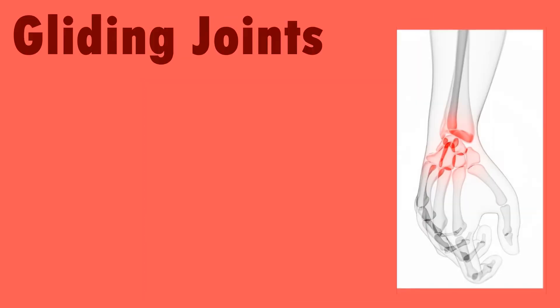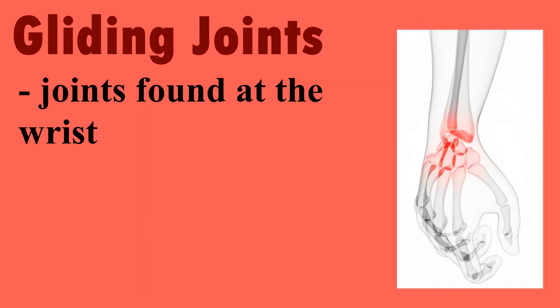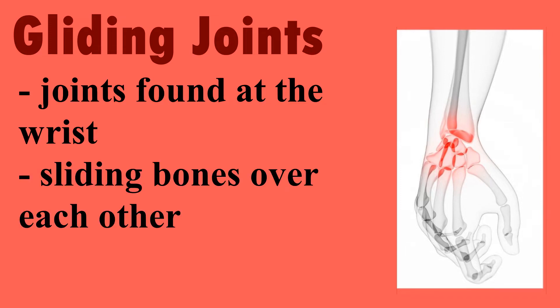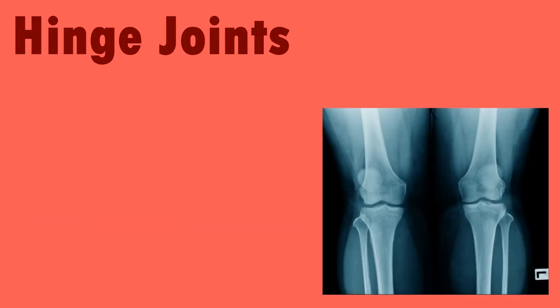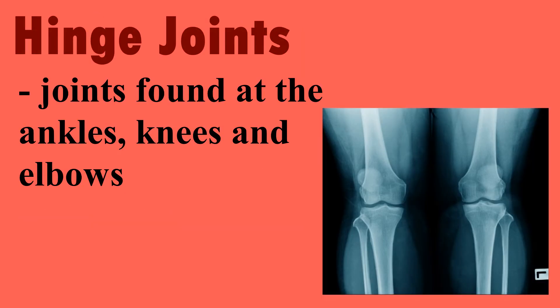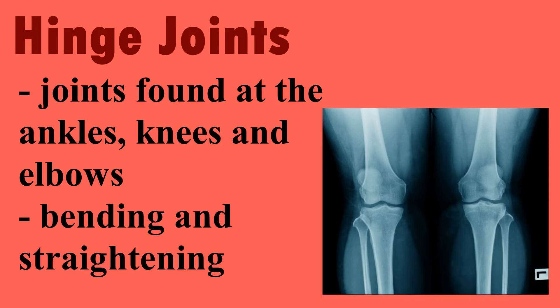Gliding joints are joints found at the wrist, sliding bones over each other. Hinge joints are joints found at the ankles, knees, and elbows, bending and straightening.